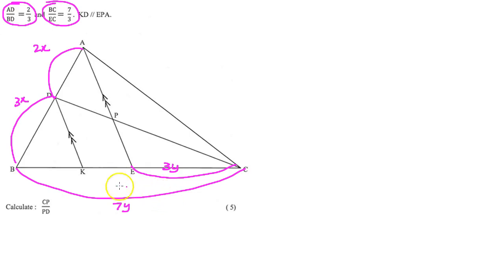So now we are going to look at the length of BE. If you can clearly see, if you label your diagram correctly, 7y minus 3y equals 4y. You have everything set up now. Remember that KD is parallel to EPA, so KE is 2x and BK is 3x.